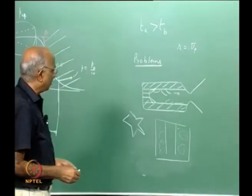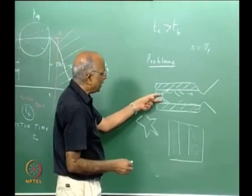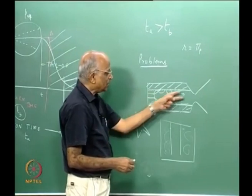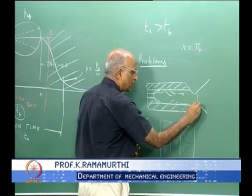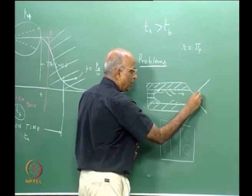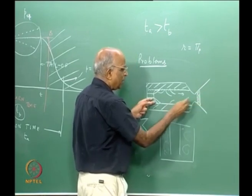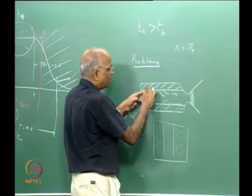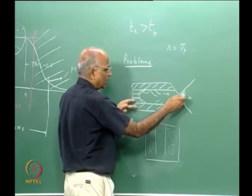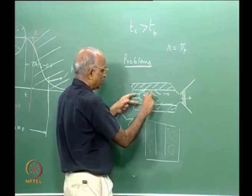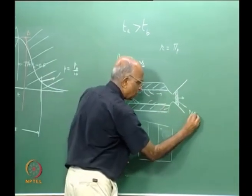Something I missed when discussing igniters: some motors have to ignite in vacuum. In this case, we put a nozzle closure — a cover over the nozzle. When pressure builds up to around 5 to 6 bar, this closure is ejected, flow through the nozzle begins, and the motor is ignited with some minimal pressure already established inside.